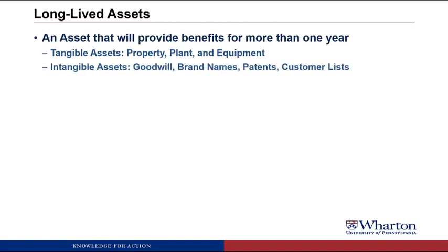The second type are intangible assets. These are things like goodwill, brand names, patents, and customer lists. These are not physical assets. Instead, they represent the cost of some kind of contractual right that will get you some kind of future benefit. If you sold these on eBay, it wouldn't even require a stamp because they're not physical assets.